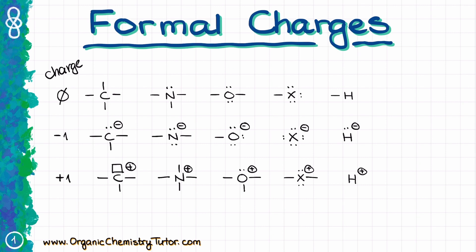There are two important things to keep in mind here. Heteroatoms should always have a full octet. So nitrogen, oxygen, and halogens all have a full octet. While it is theoretically possible to have heteroatoms with an open shell — only six electrons around them — they are too unstable for organic molecules and we won't normally see those.